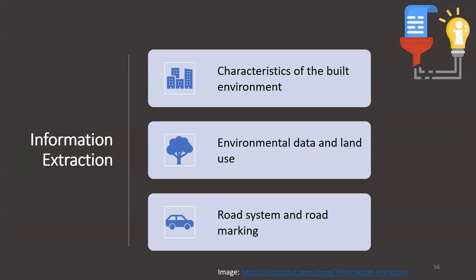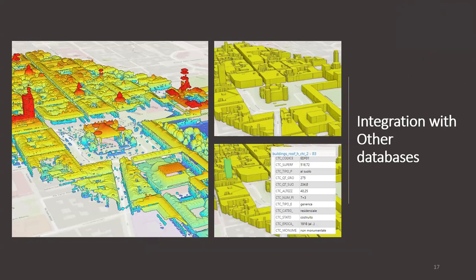After data acquisition and processing, the next question is: what useful information can be derived? Our focus areas were: extracting features and characteristics of the built environment about buildings and roads, environmental data and land use, and road markings for multiple applications. We also attempted to integrate our products with other databases — for example, the CityGML model is roughly at LOD2 with simple height extrusions and no specific roof geometry, so if we can integrate our detailed rooftop data with this model, it becomes much more useful.